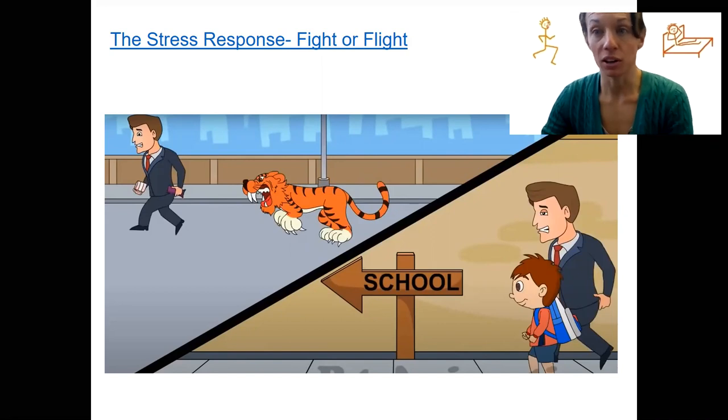We'll talk more about this reaction specifically in terms of the physiology. For example, if there's something chasing you - a bear, a mountain lion - this response is still advantageous for us if we're in an acutely stressful situation.